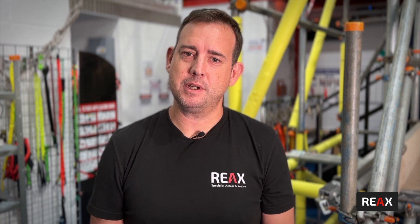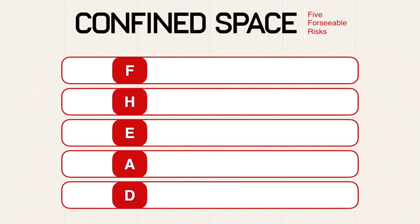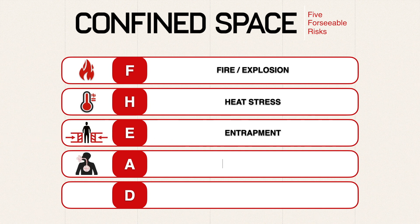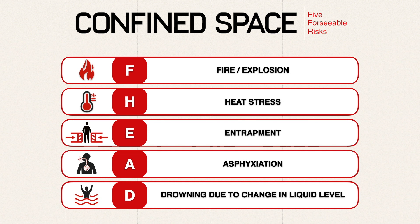These five foreseeable risks can be easily remembered with the acronym F.H.E.A.D. F — fire and explosion: do we have a flammable atmosphere? H — heat: is there a loss of consciousness potential through a rising body temperature? E — entrapment in free-flowing solids. A — asphyxiation through poisonous or asphyxiating gases, or a lack of oxygen. D — drowning through an increase or rise of liquid in our space.